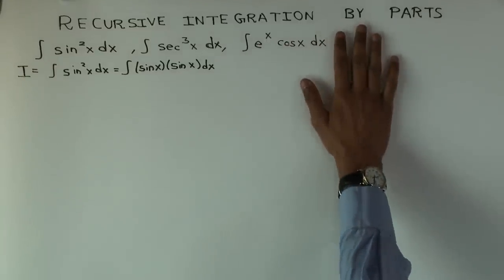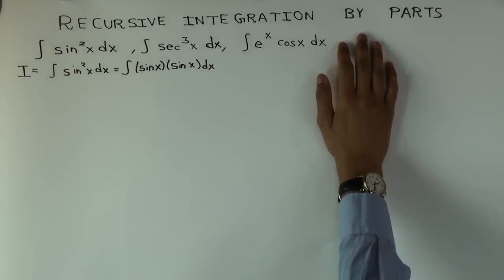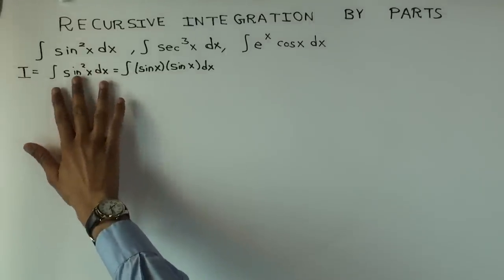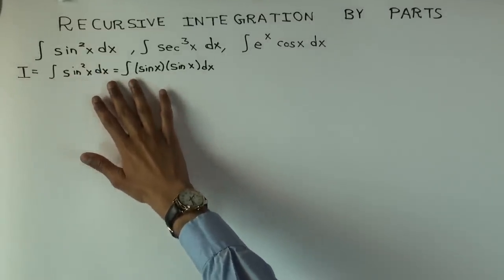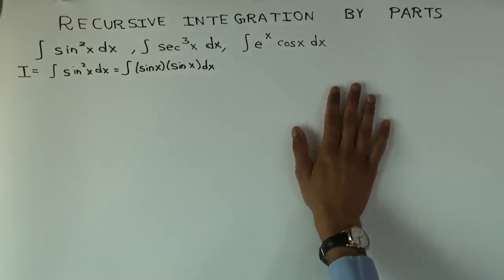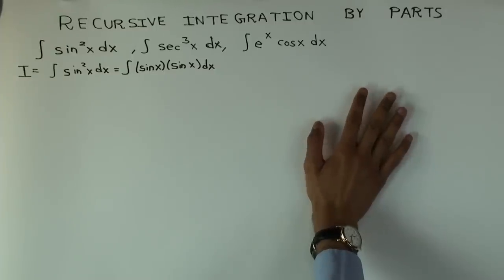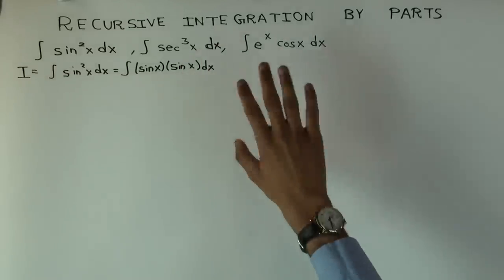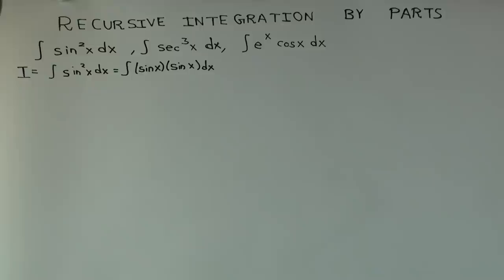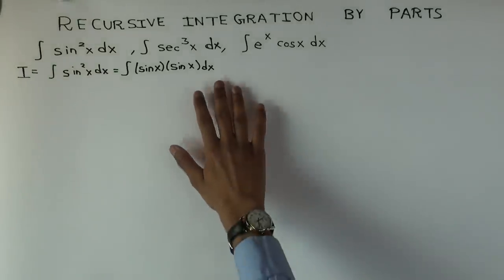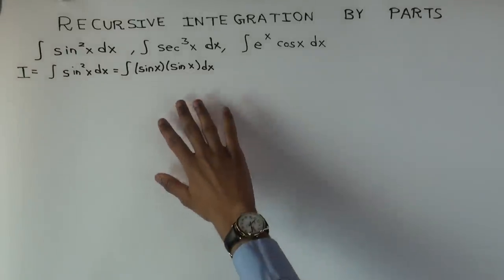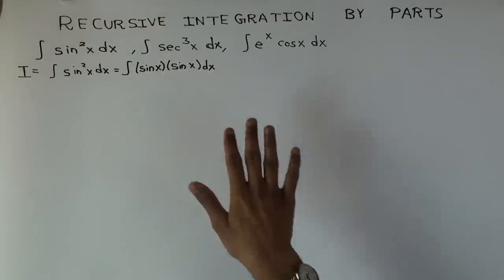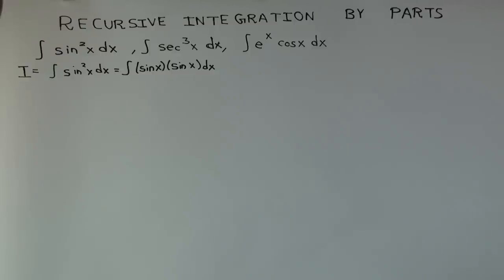In this video, we're going to do the recursive version of integration by parts, which is a version where you start off by calling the integral you're trying to calculate as I, then you use integration by parts, and you see that I appears again on the right side when you're simplifying. You rearrange, do some linear equation solving, and get the value of I. You should not confuse this with the circular trap, where you end up integrating what you originally differentiated and get back — that doesn't give you any information, whereas this actually does.